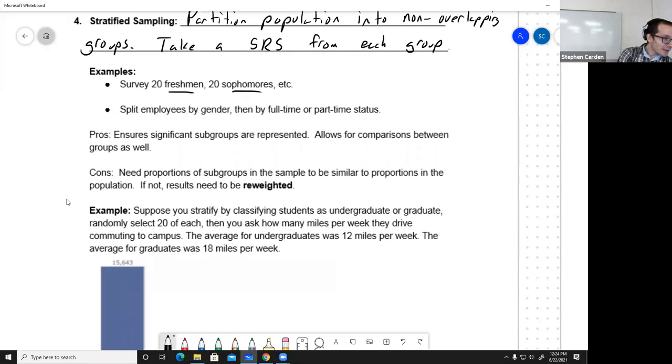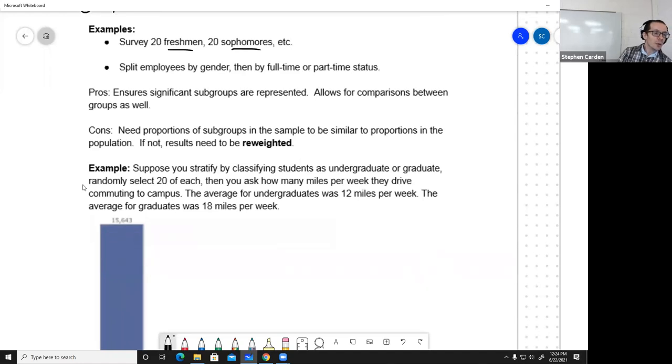What's good about stratified sampling? This ensures that your significant subgroups are represented, which will increase the probability of an accurate estimate. You can do a more complex analysis too. You can now do comparisons between freshmen and sophomores and so on more easily. What's bad about this? You want the proportions of subgroups in the sample to be similar to proportions in the population. If they're not, then you need to reweight them. Here's an example of how you might do that calculation.